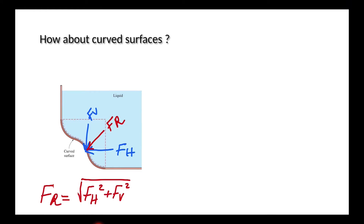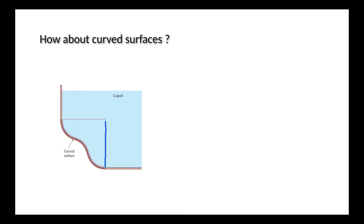How do we calculate the horizontal and vertical components? This is done by considering a liquid block and then drawing its free body diagram. The liquid block I'm going to choose is the portion here. The good thing about this liquid block is that we don't need to work with the curved surface — we have the vertical and horizontal projections of it. So instead of finding the centroid of this curved surface, we can find the centroids of these vertical and horizontal surfaces, which is going to be much easier.